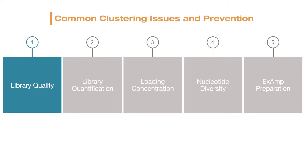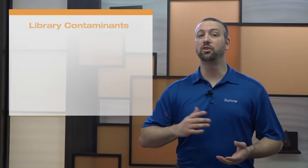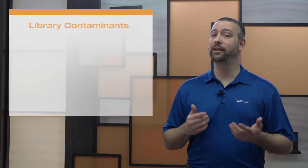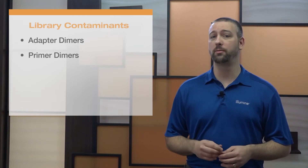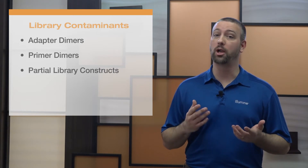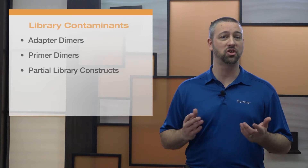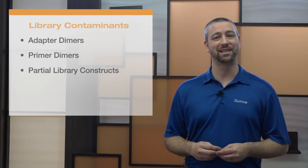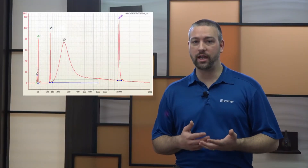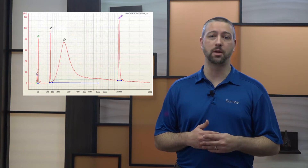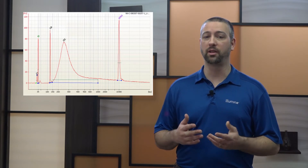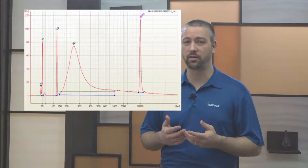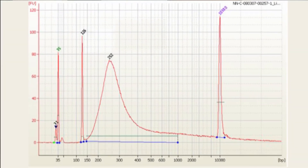Let's first talk about library quality. Library preparations that undergo insufficient library cleanup leave contaminants such as adapter dimers, primer dimers, or partial library constructs in the final library pool. In this case, quantification of cluster-generating fragments can be inaccurate due to these contaminants, which can lead to inconsistent cluster densities. Be sure to verify the quality and purity of all libraries using the method described in the appropriate library prep documentation. Commonly, Bioanalyzer, TapeStation, or Fragment Analyzer can be used to check library integrity, average insert size, and unexpected contaminant peaks, as seen at the 120 base pair peak in this example.